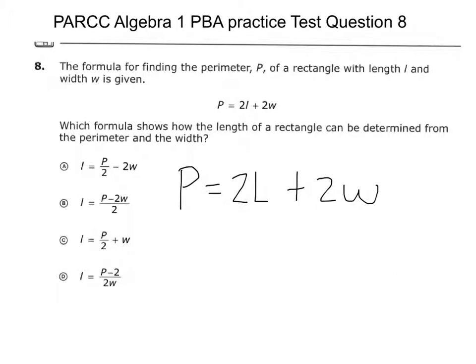So what do I do first to solve for L? Subtract 2W on both sides like this. Now when you do that, you get P minus 2W equals what? 2L.